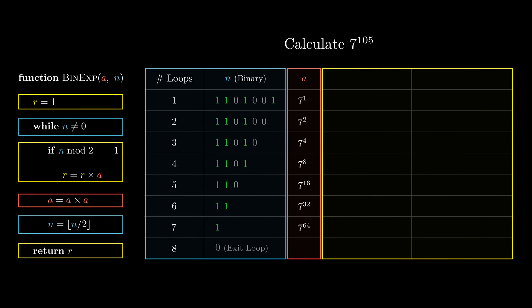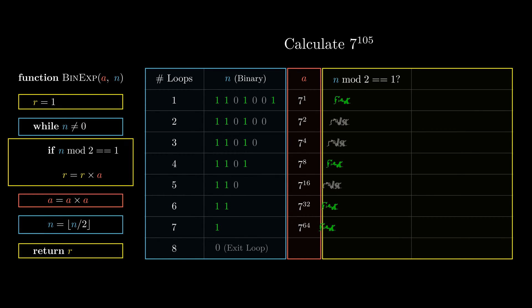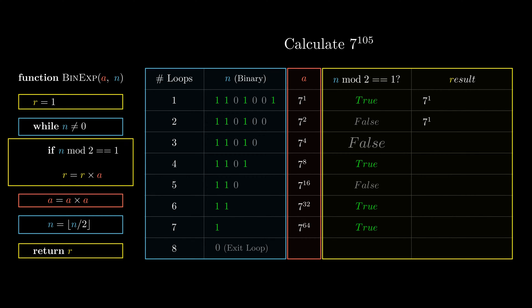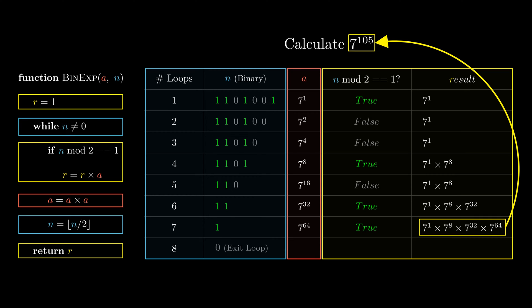Finally, let's look at the code in yellow. Firstly, we initialize r as 1. Then we will examine whether the remainder of n divided by 2 is 1. In other words, we examine whether the last digit of binary n is 1. If so, we will multiply r by a. The final result of r would be 7 to the power of 1 times 7 to the power of 8 times 7 to the power of 32 times 7 to the power of 64, which is equal to 7 to the power of 105.